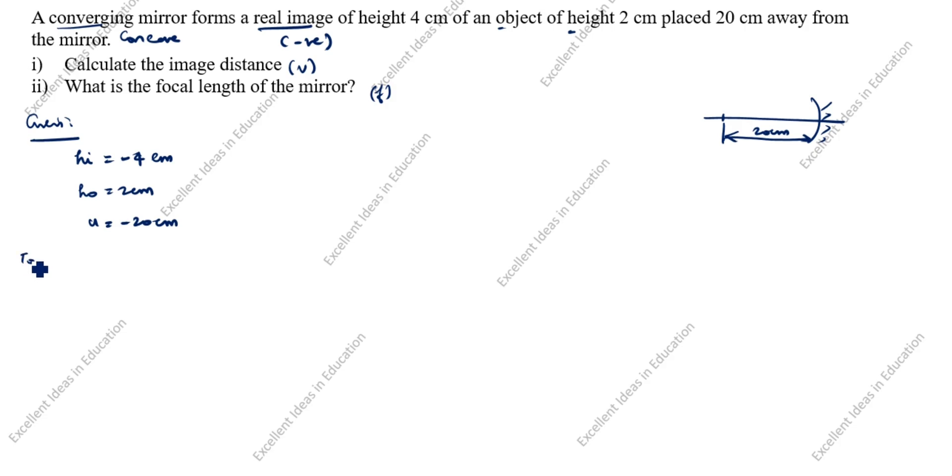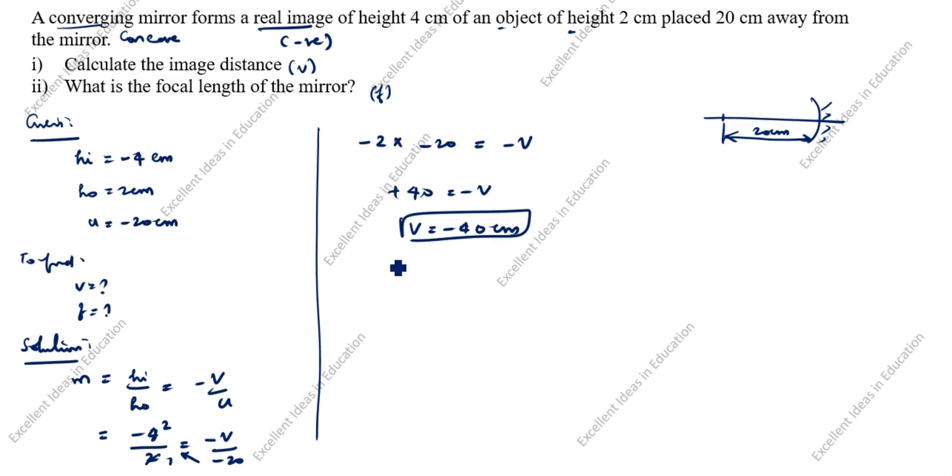Next, we need to find v and f. What is the solution? What is the magnification formula? Hi by Ho is equal to minus v by u. What is Hi value? Hi is minus 4, Ho is 2 is equal to minus v by u value is minus 20. Cross this. Next is minus 2 into minus 20 is equal to minus v. 2 into 20 is 40, minus into minus plus equal to minus v. So v is equal to minus 40 cm. So image formed is in front of the concave mirror.